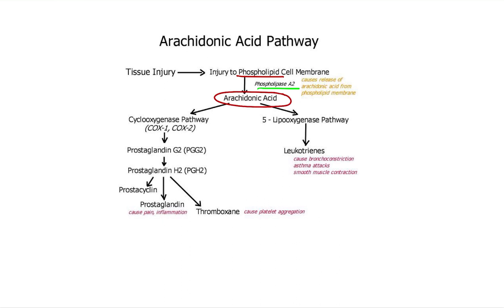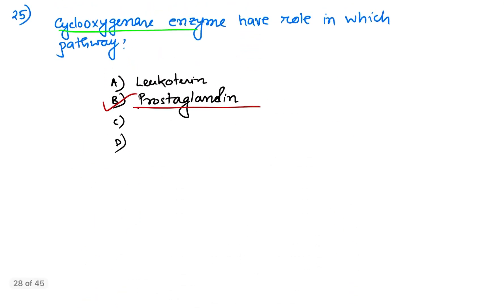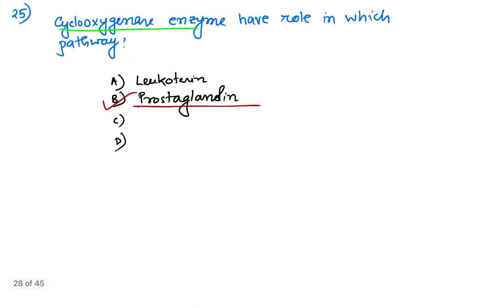Then by the cyclooxygenase pathway, the prostaglandin production occurs and by lipoxygenase pathway, leukotrienes are produced. So the question is about cyclooxygenase. It helps in production of prostaglandin. So the answer will be prostaglandin, cyclooxygenase enzyme.